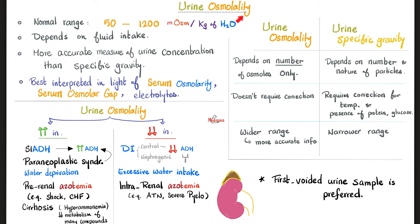Urine osmolarity in a nutshell: normal range is 50 to 1,200 mOsm per kilogram of water. It depends on fluid intake, so you need to tell the lab whether the patient is fasting or feeding.